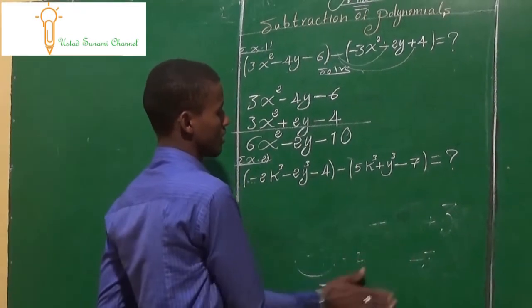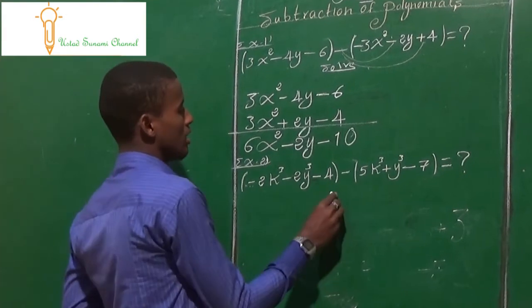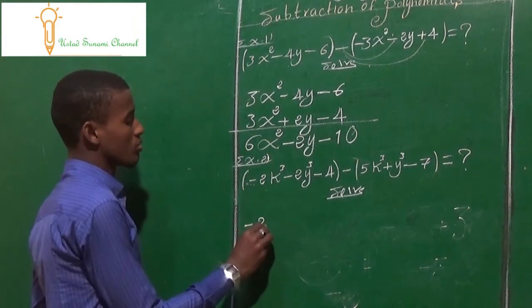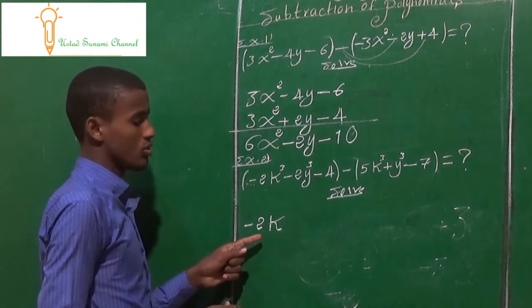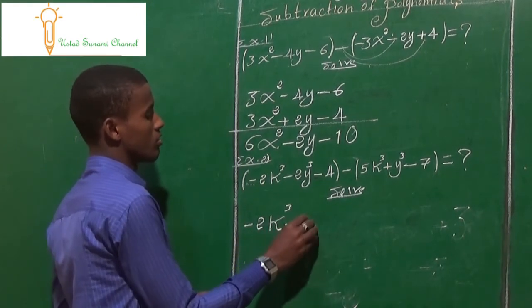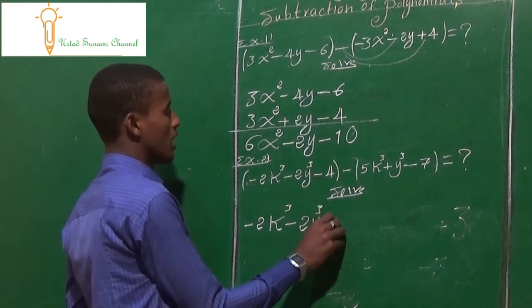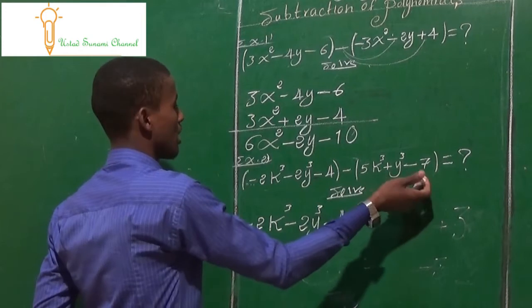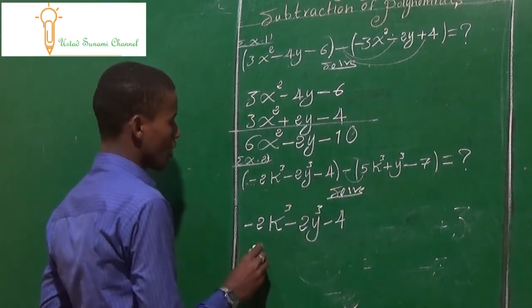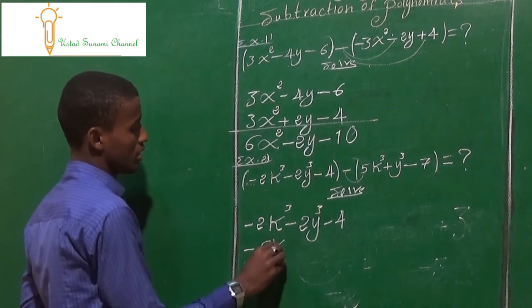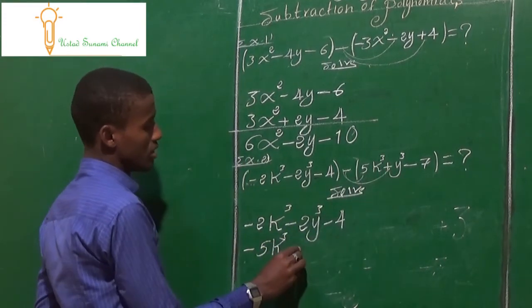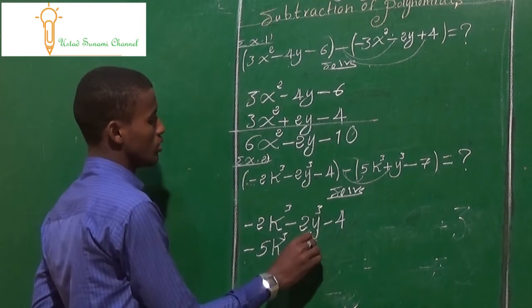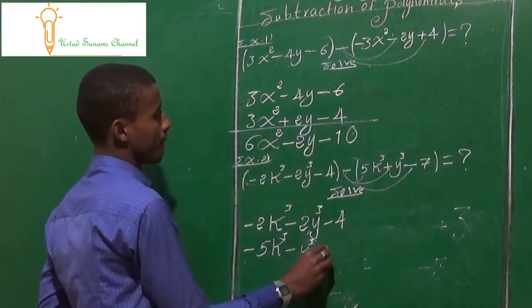I'm going to show you the solution myself. Minus 2k minus 2i minus 4. Minus 3i minus 2i minus 4i.